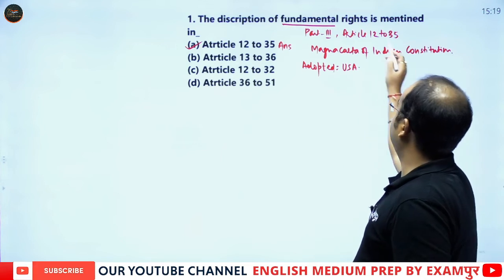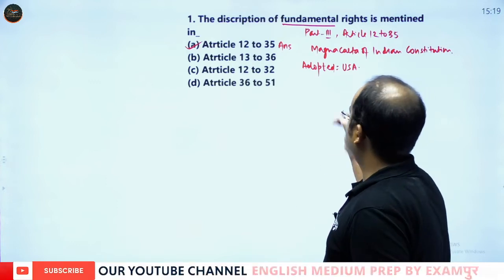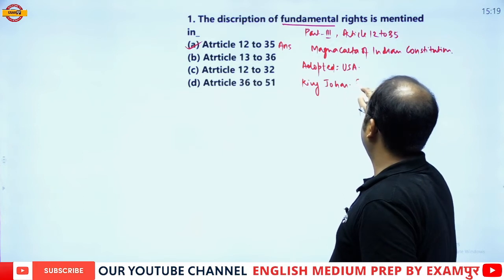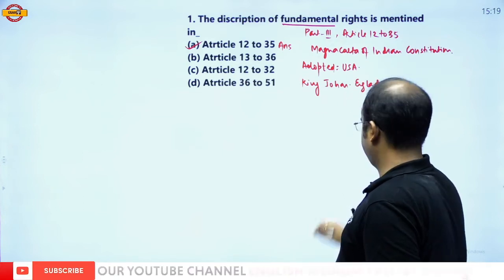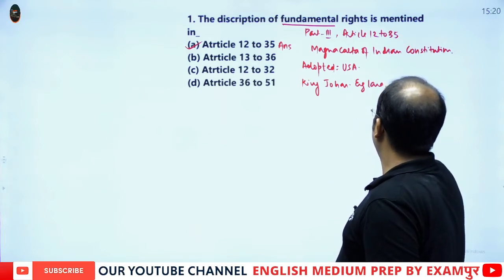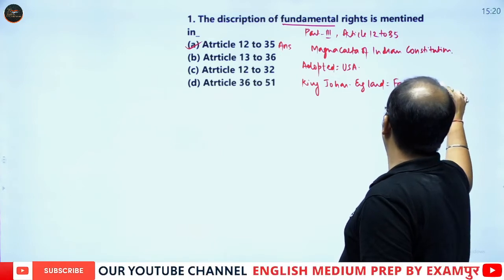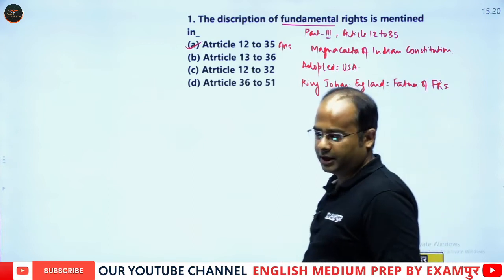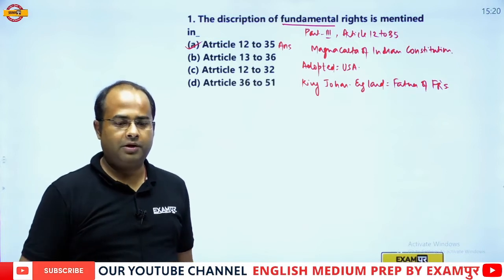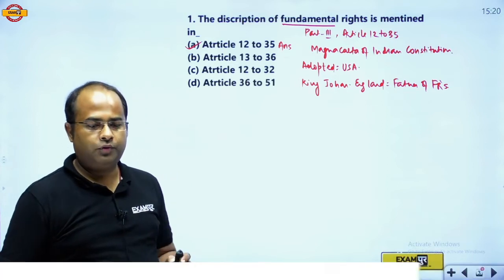So, Article 12 to 35 covers Fundamental Rights, and King John of England is called the father of Fundamental Rights. Therefore, the correct answer is option A, Article 12 to Article 35. Now let us move to the next question.